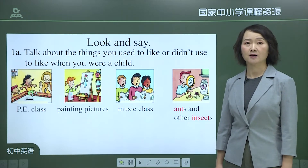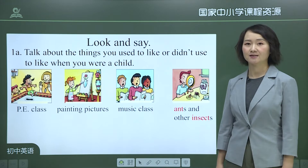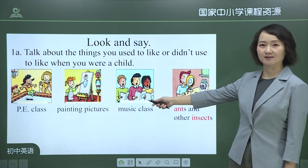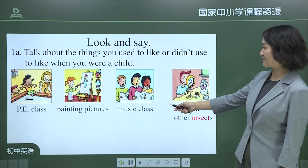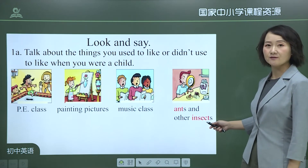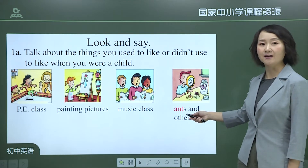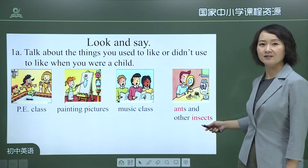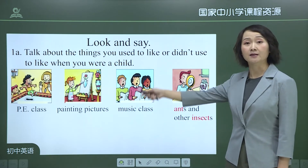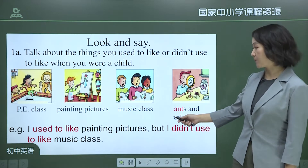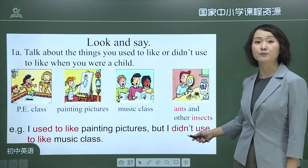Now let's talk about the things you used to like or didn't use to like when you were a child. Look at the four pictures: PE class, painting pictures, music class, ants and other insects. Two new words: ant (蚂蚁) and insect (昆虫). For example: 'I used to like painting pictures but I didn't use to like music class.'